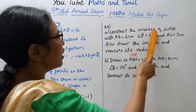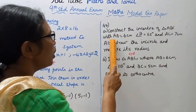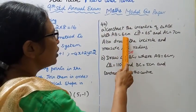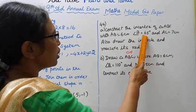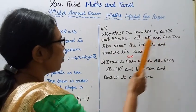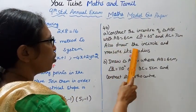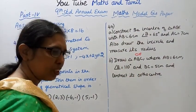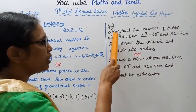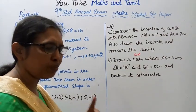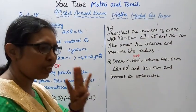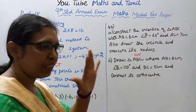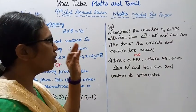Question 44a: Construct the incenter of triangle ABC with AB equal to 6 centimeter, angle B equal to 65 degrees, and AC equal to 7 centimeter. Also draw the incircle and measure its radius. This is incenter. You can find the example sum and after that exercise has five sums on incenter.